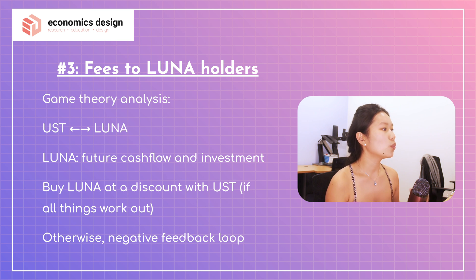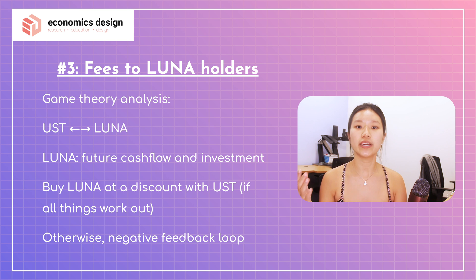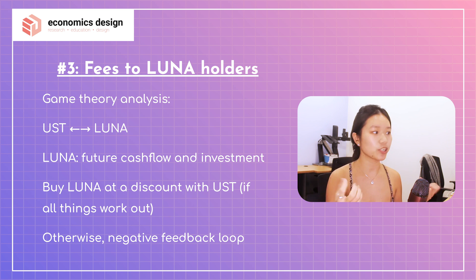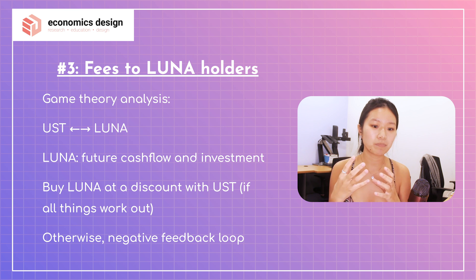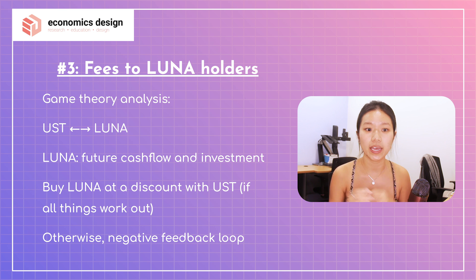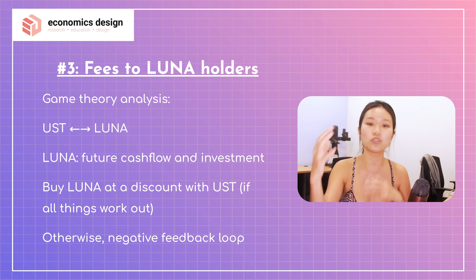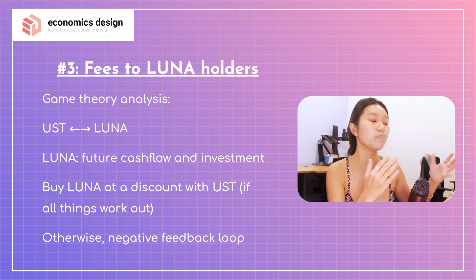Regarding fees paid to Luna holders: from a game theory perspective, when UST falls below $1, people trade UST for Luna, essentially buying Luna at a discount — and Luna entitles them to future cash flow from the ecosystem. The potential flaw in this loop is that if everyone just holds Luna without transacting, no future cash flow accrues to Luna holders. The ecosystem is addressing this by building more protocols and attracting third-party developers to increase utility and transactions, which increases potential cash flow to Luna holders and mitigates the negative feedback loop.